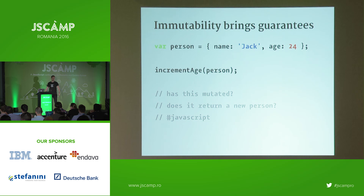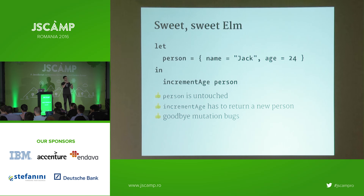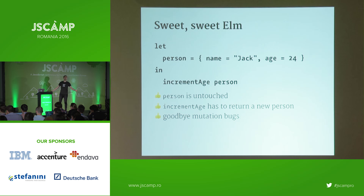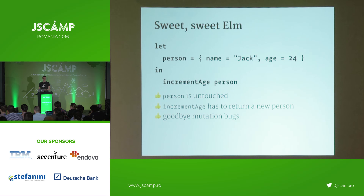In Elm, if you have a person and call incrementAge on that person, you have guarantees: the person record is untouched, so incrementAge must return a new person. You don't have to deal with mutation bugs. Elm also has modules where everything is scoped — no global scope. Modules must explicitly declare what they expose and what they import, not unlike the ES2015 module spec or CommonJS-style Node modules.